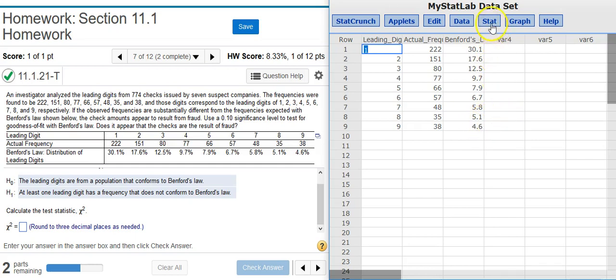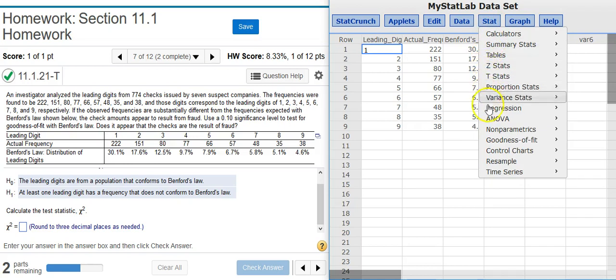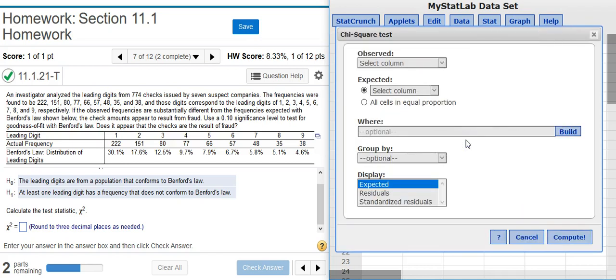To run the Goodness-of-Fit test, I go to Stat, Goodness-of-Fit, Chi-Square, because we're not looking to compare with the normal distribution. So everything that we want to compare with is going to be with the Chi-Square test. We need to select our observed and expected frequencies. The observed frequencies are what we actually observe in the real world. This is the actual frequency column in this case.